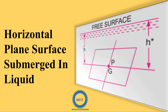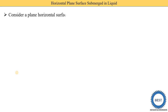In this video I explain about horizontal plane surface submerged in a liquid. In the last video we understood about total pressure and center of pressure. From this video we study four types of surfaces submerged in liquids, and for these four types we find two equations: one for total pressure and one for center of pressure. First, we consider a plane horizontal surface submerged in a static fluid, as shown in the figure.